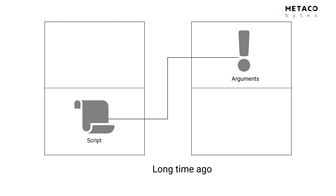On screen you can see two transactions. The transaction on the left has one output that gets spent by the transaction on the right. A transaction is like a box divided in two — the bottom is the output and the top is the input. Long ago, you could basically put a script inside your output and push arguments in the input. A script is basically a function that takes some arguments and returns true or false depending on whether the arguments satisfy the condition to spend the output.